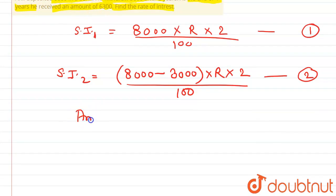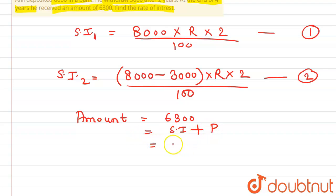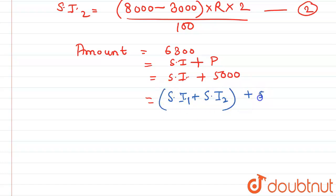It is given that the amount received is 6300. So the amount in the bank, with principal 5000, equals principal plus SI1 plus SI2. Here, principal is 5000 and SI is unknown. So SI equals SI1 plus SI2, which means SI1 plus SI2 equals 6300 minus 5000, that is 1300.